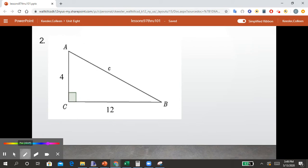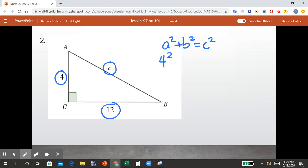Okay, so for number two, we go through that same process. Again, we have the leg lengths of 4 and 12, and we're looking for the hypotenuse length of C. So again, we have A squared plus B squared equals C squared. A being 4, B being 12, leaving C squared.